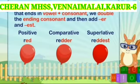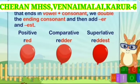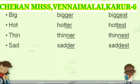Rule 4: When the positive is a word of one syllable that ends in a vowel plus consonant, we double the ending consonant and then add -er and -est. For example: red, redder, reddest. More examples: big, bigger, biggest. Hot, hotter, hottest. Thin, thinner, thinnest. Sad, sadder, saddest.